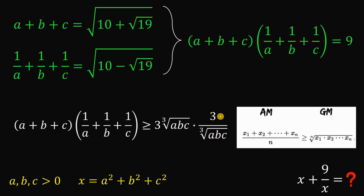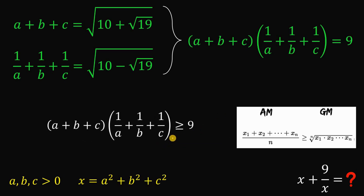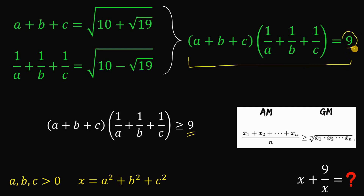So 3 times 3 simply equals 9. It follows that the minimum value of the product of (A plus B plus C) and (1 over A plus 1 over B plus 1 over C) is 9. The product of our two equations is exactly 9, which is the minimum value. For this to happen, A must be equal to B must be equal to C. So using the AM-GM inequality, we can say that A equals B equals C.